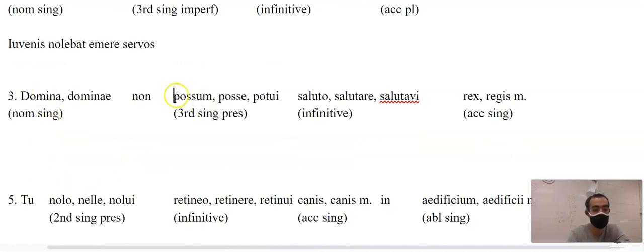Next one is domina. Domina is going to stay the same, it's nominative singular. Non potest. It's got the S like est, that's where it comes from, is able. Salutare, regem E-M, that's a third declension, regis.